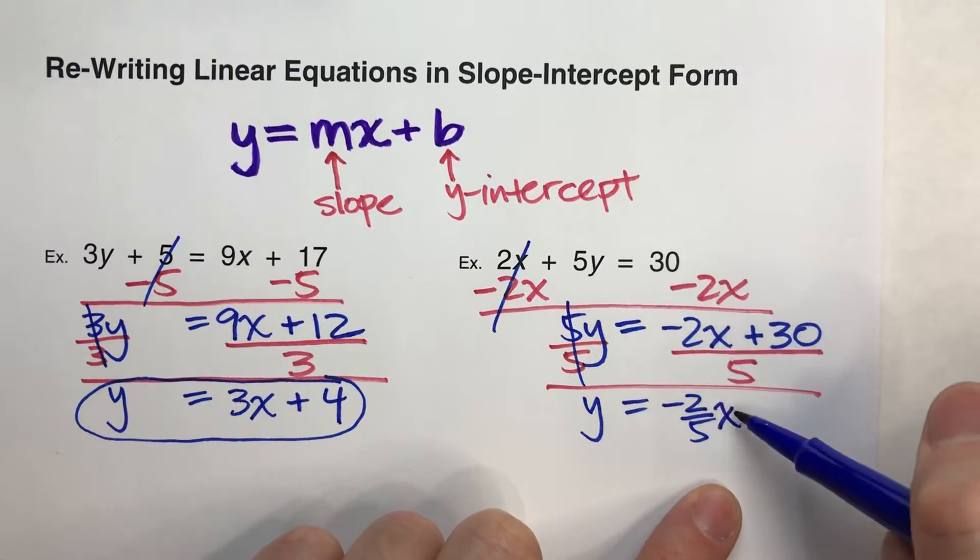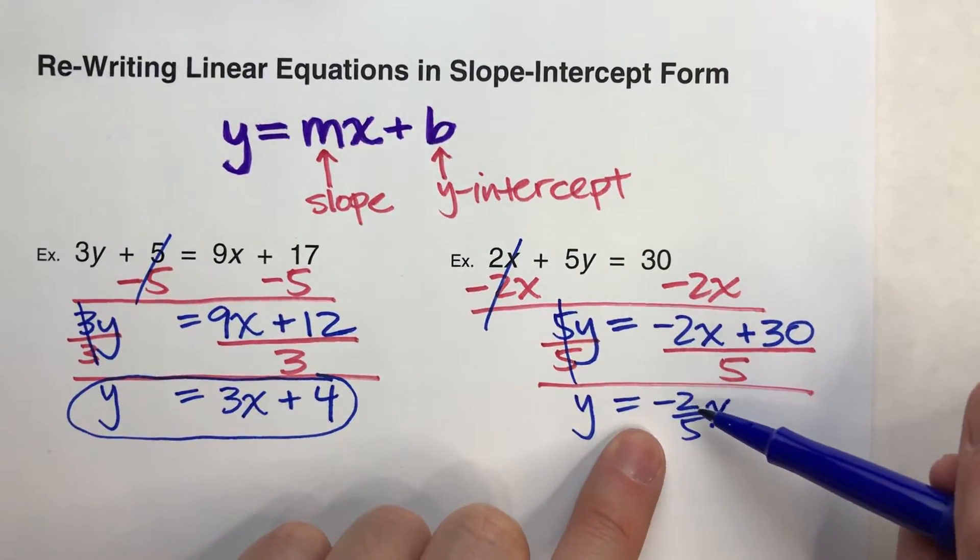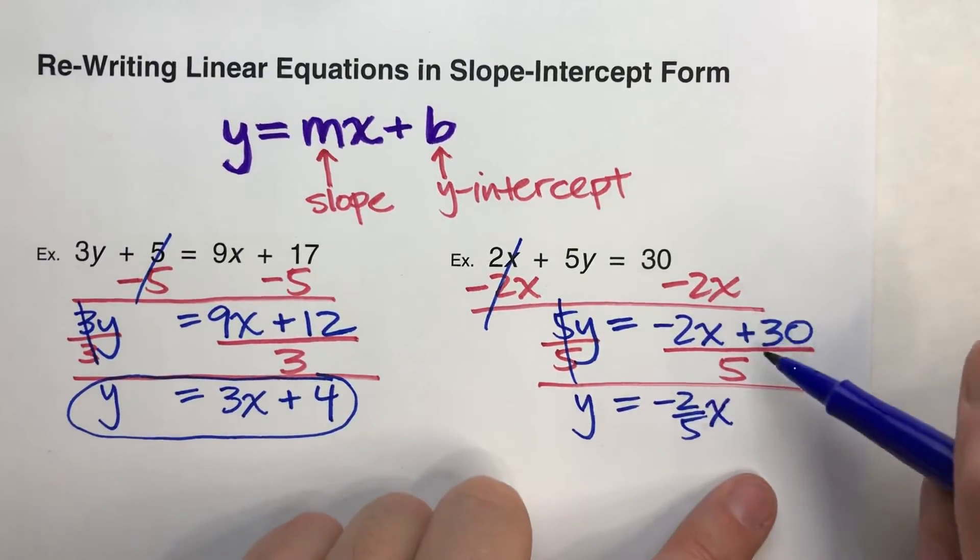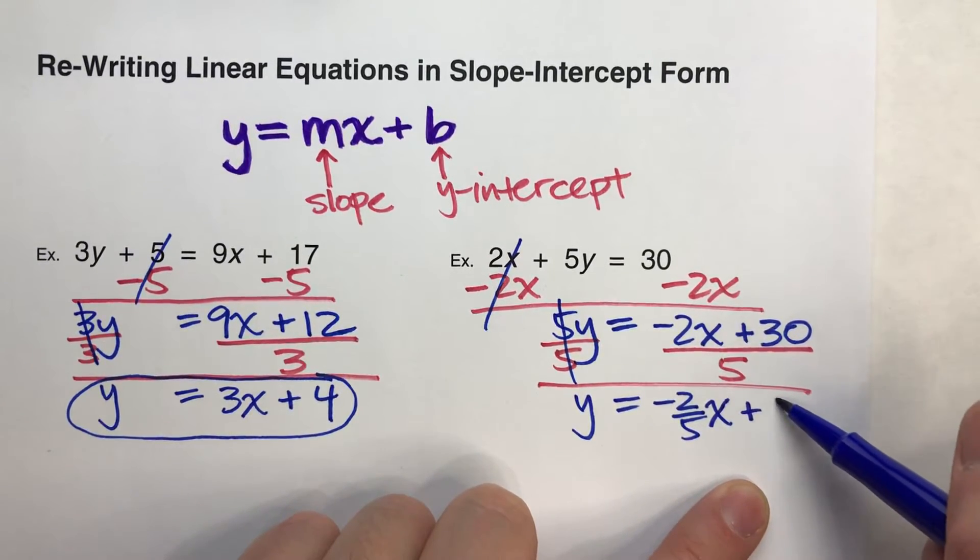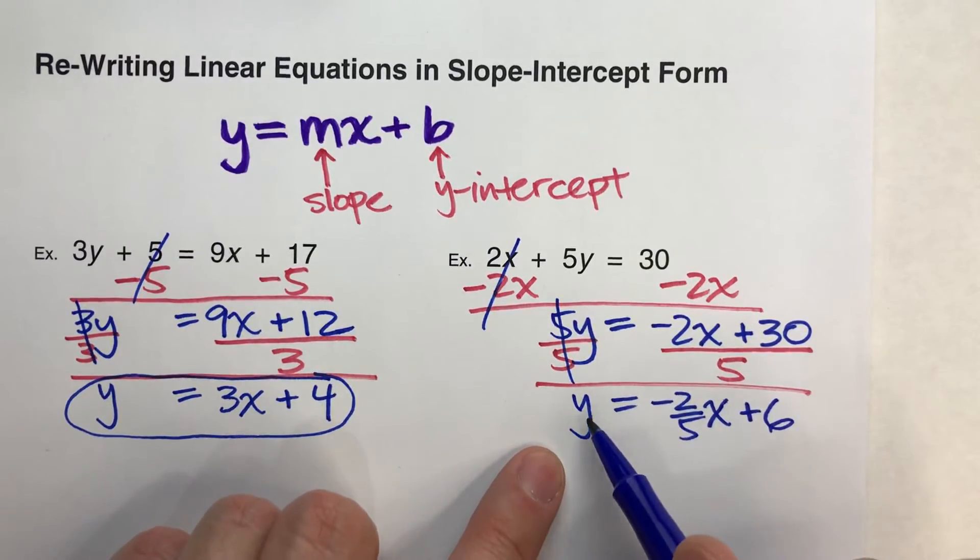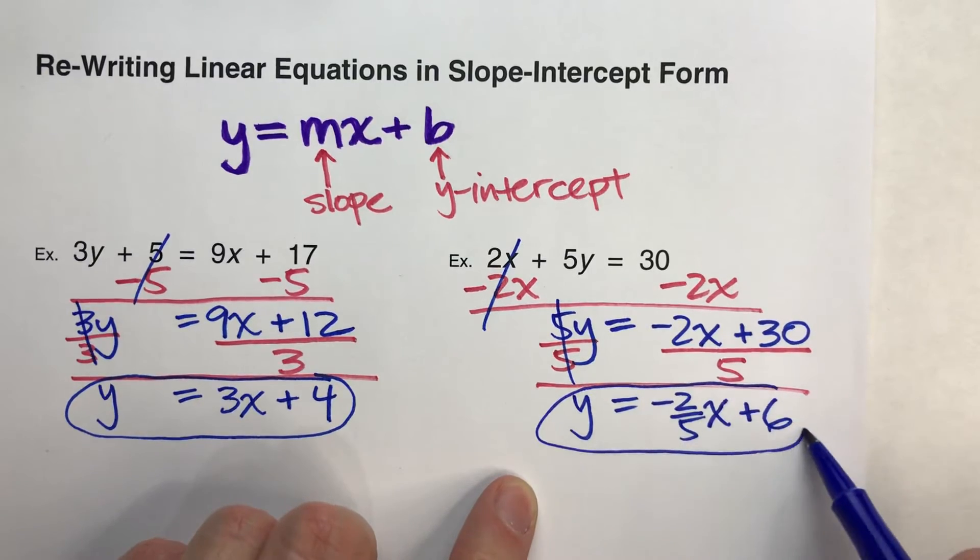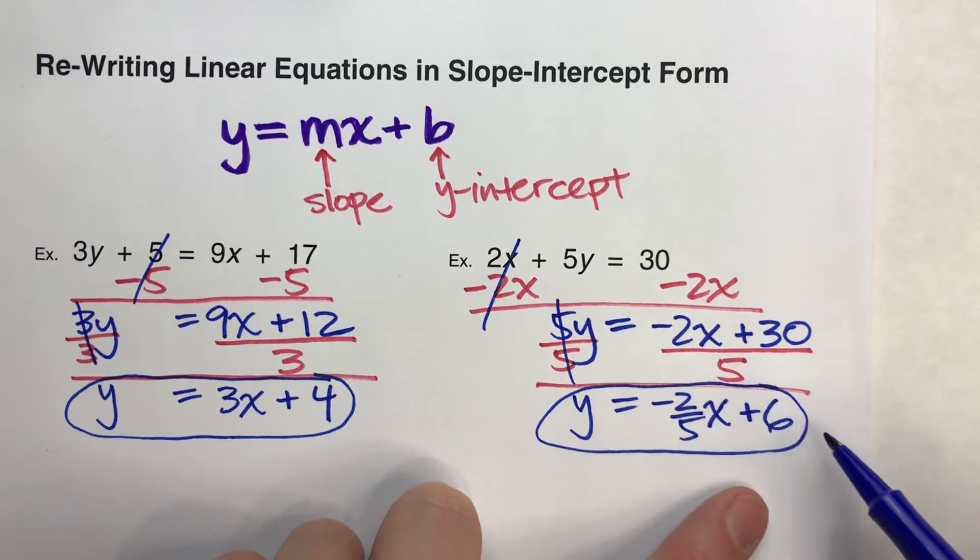And then there's an x there. Negative 2 divided by 5 is negative 2 fifths. Plus 30 divided by 5, which actually does come out to a whole number, it's 6. And if you look here, this is in slope-intercept form. Y equals negative 2 fifths x plus 6.